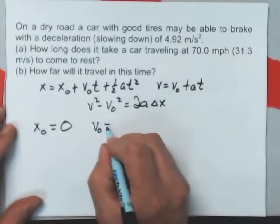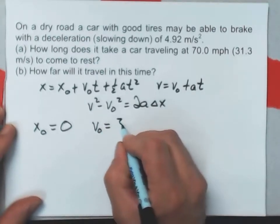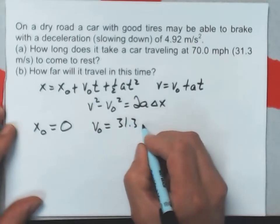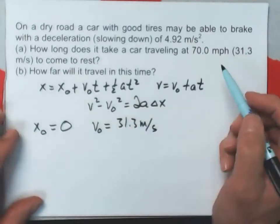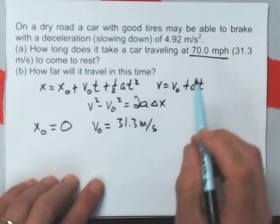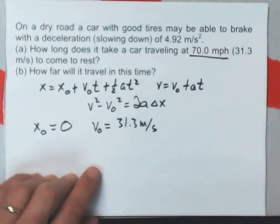v naught, I'm given, is 31.3 meters per second. We're also given that in the American system of units, 70 miles per hour,